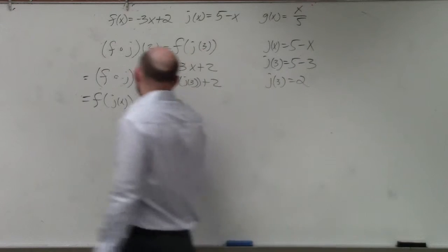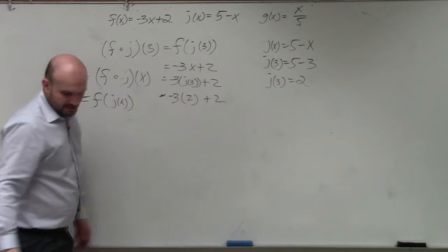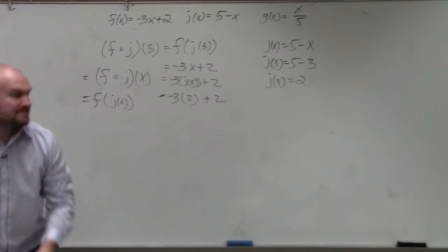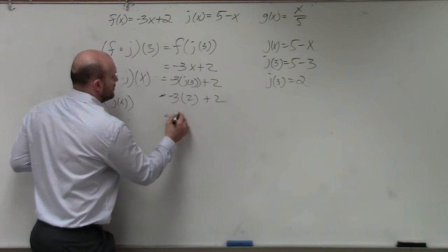Yes, it's 2. So in reality, this is negative 3 times 2 plus 2. Using my order of operations, negative 3 times 2 is negative 6. Negative 6 plus 2 is negative 4.